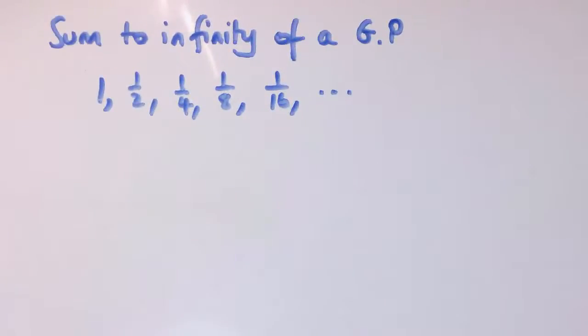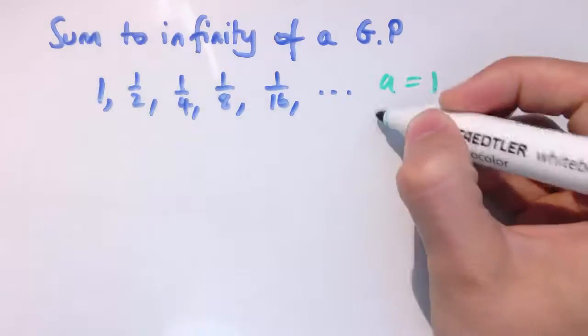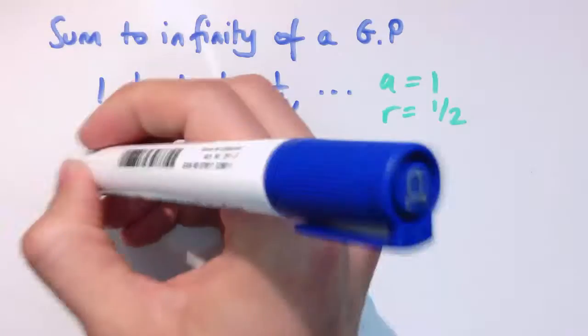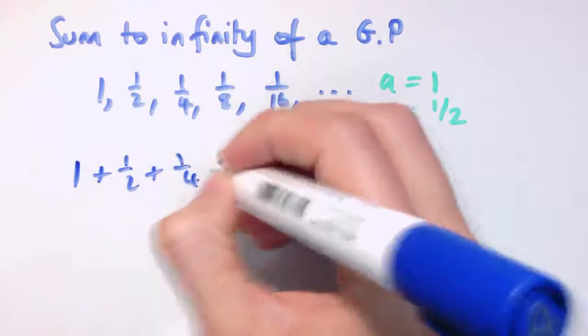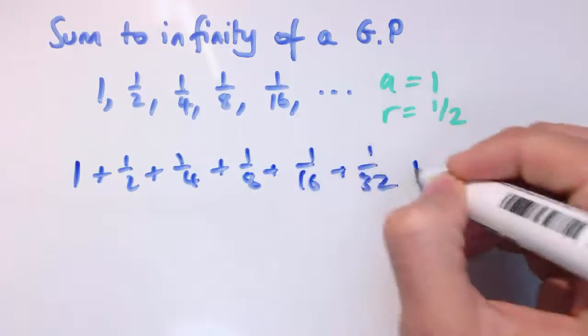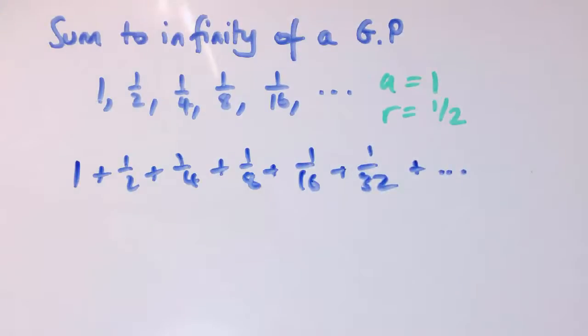In the previous video, when we looked at summing finite geometric progressions, the last example we gave was this one here, which had first term 1 and common ratio 1 half. We found the sum of the first 10 terms. I mentioned that if you sum this to infinity, you would get the number 2. Let's think about what we mean by summing it to infinity.